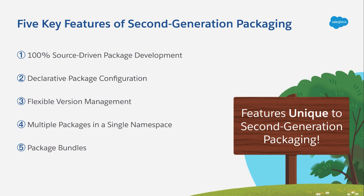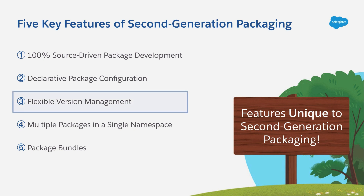The third feature we'll cover is probably the most important but least understood thing in all of 2GP, and that's Flexible Version Management. This feature video is a little bit longer than the other ones in this playlist, but I promise it's worth the time. Once you understand the value of Flexible Version Management, you'll see why this is the superstar feature of 2GP, even if multiple packages in a single namespace is the feature that usually gets all of the attention.